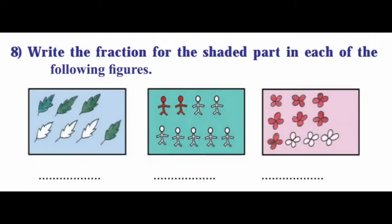8th main. Write a fraction for the shaded part in each of the following figures. So 7 leaves are there, 4 are colored. So 4 by 7. Next, 9 are there, 2 are colored. So 2 by 9. 10 flowers are there, 7 are colored. So 7 by 10.